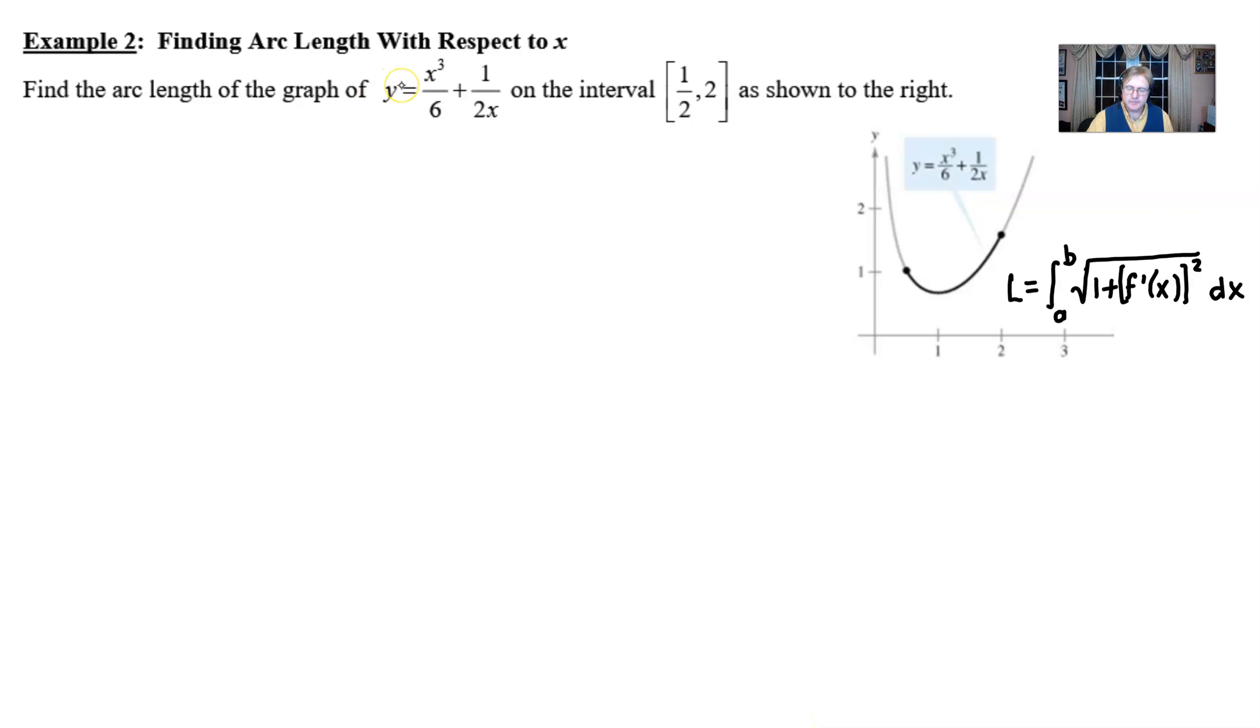We're already given the function y which is the same as f of x so we could proceed very easily to take that derivative. Upon doing that we would end up with a three out in front so we'll cancel the three and the six to get one half and then x lowers to the second power.